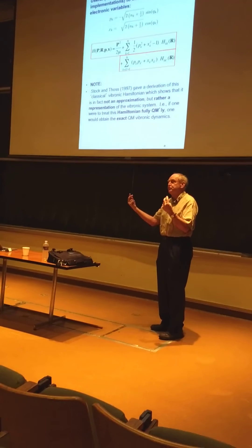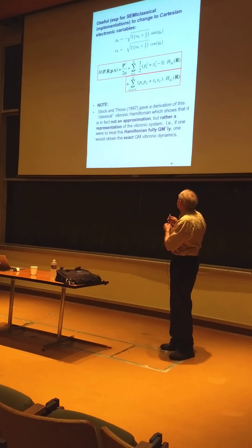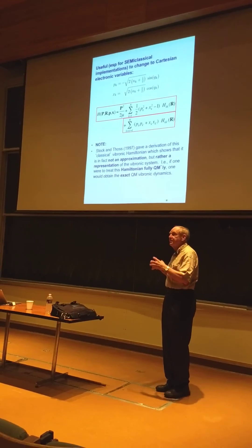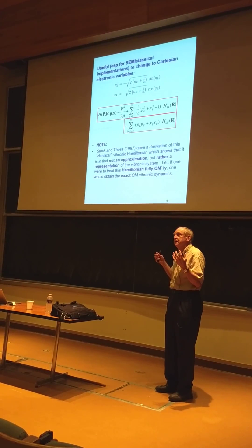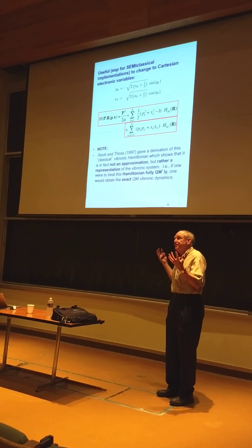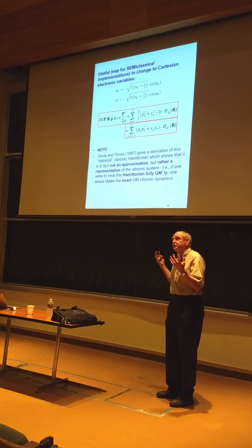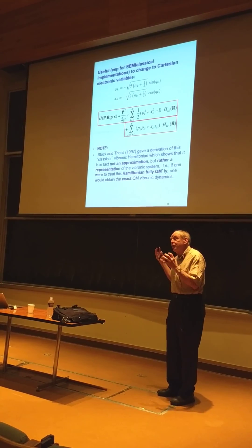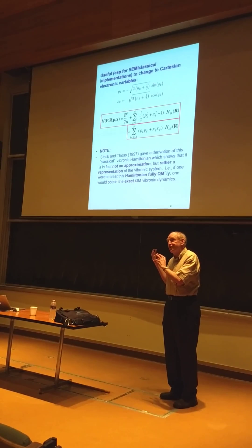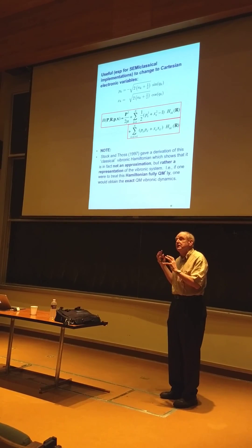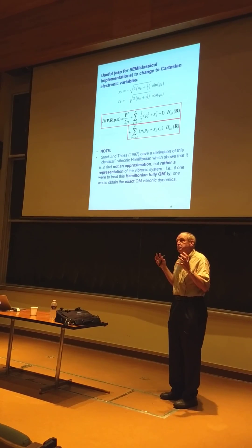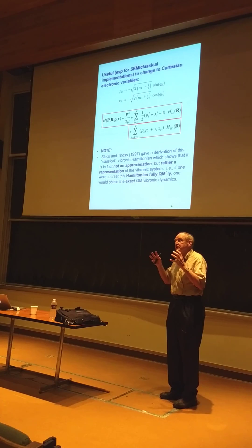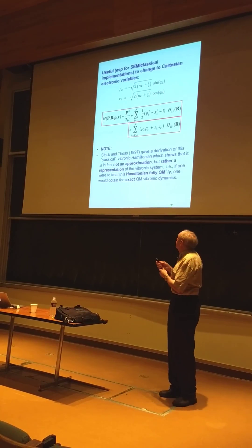So, electronic transitions are... So by electronics, it's just like adding vibrations to the problem. We have 1,000 nuclear degrees of freedom and three electronic states. Now we have 1,003 classical degrees of freedom. We've just added three vibrational degrees of freedom into the problem.